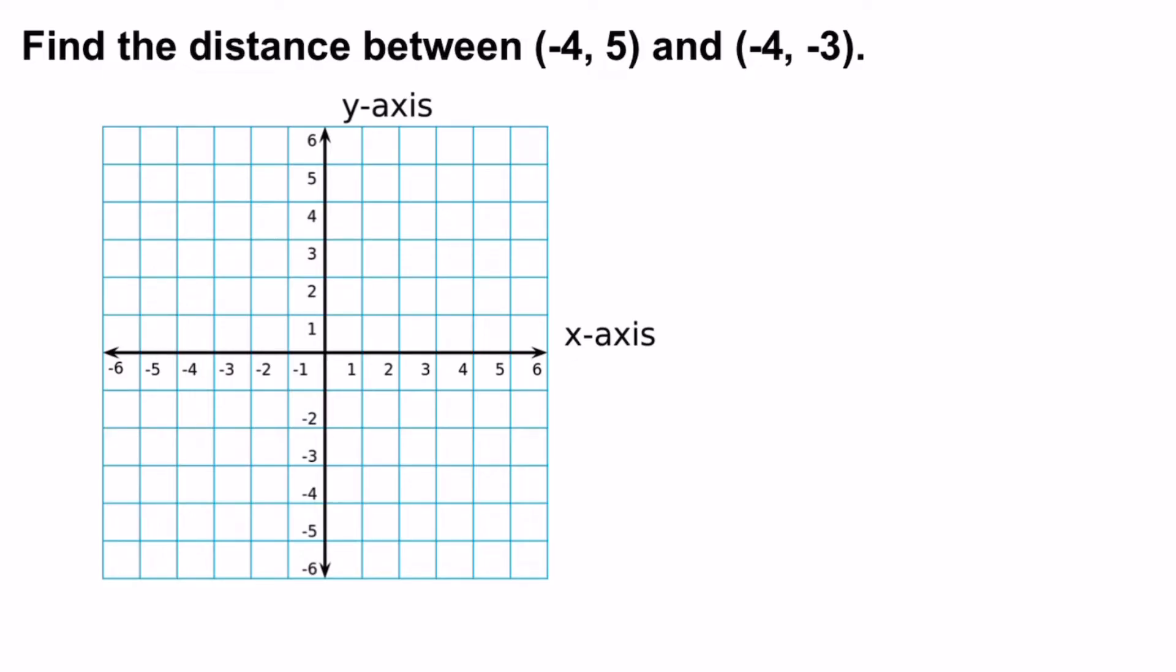Negative 4 says go to the left 4 times, 1, 2, 3, 4, and then up 5: 1, 2, 3, 4, 5. And if you did what I did, your first dot should be in quadrant 2.